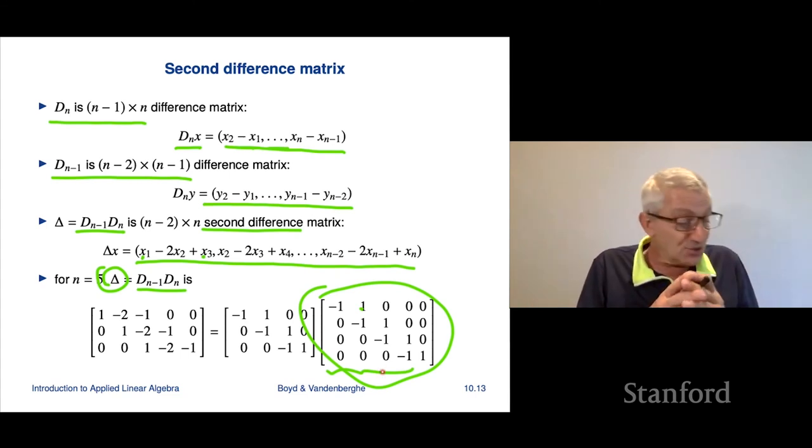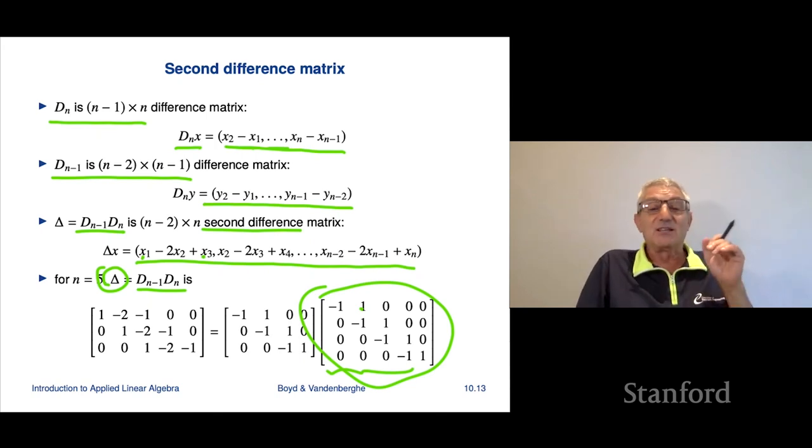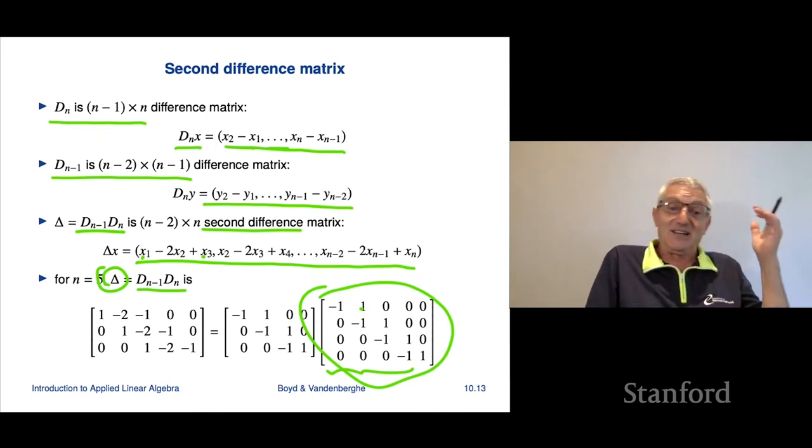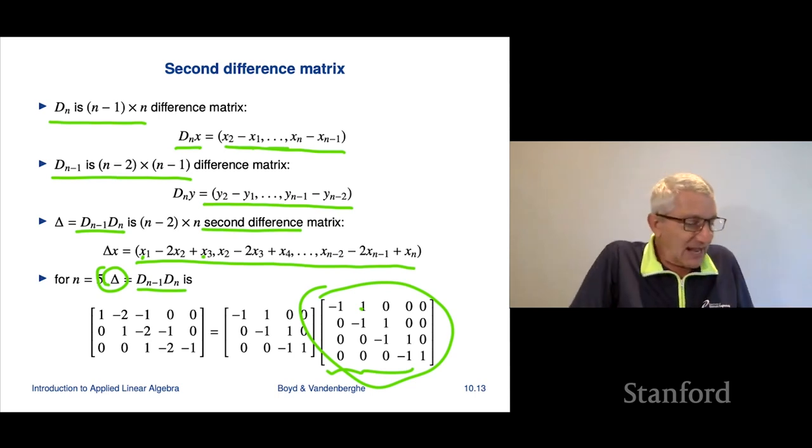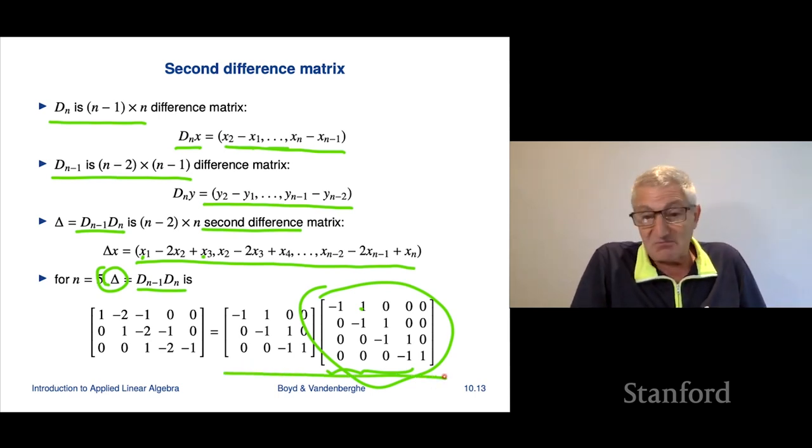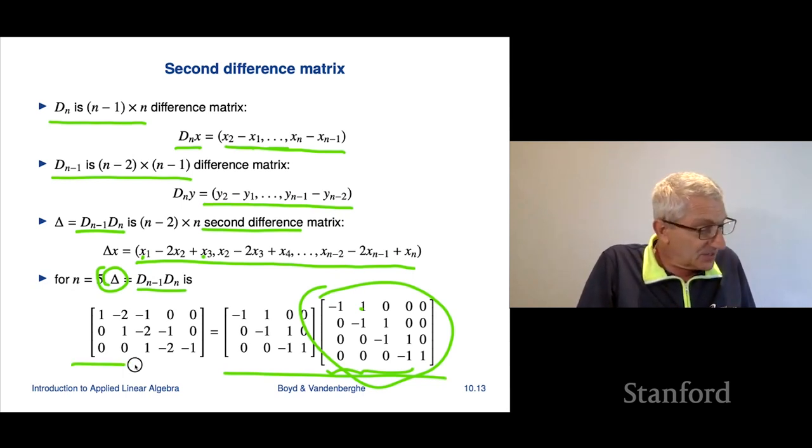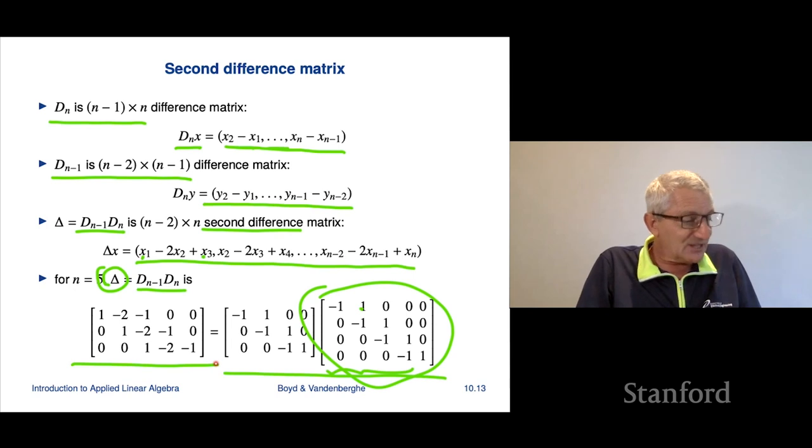Then you take those, you started with a 5 vector, now you've got four differences, and now you difference those, and you're gonna end up with a 3 vector, which is the second difference minus the first difference and so on. And what you do is you will simply multiply these two matrices. One is, they're the two different sized difference matrices, and you get this matrix here and you see that sure enough, it's this thing, it's exactly the same thing. So it's very cool.